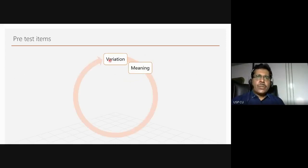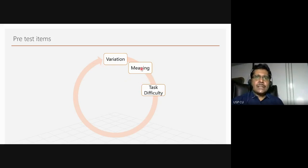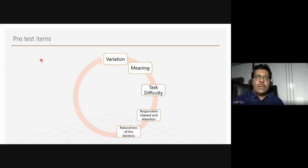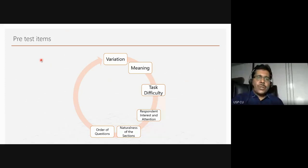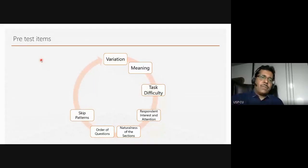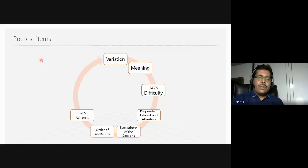What are we looking for in the pretest? We look for variation — the same question must provide some kind of variation, not just one kind of answer. We check whether the question means the same thing to everybody, whether people find it difficult, whether they find it interesting, whether they pay attention to the questionnaire, whether the sections are flowing naturally, whether the order of questions is correct, and whether there are patterns in answering that we need to break up.